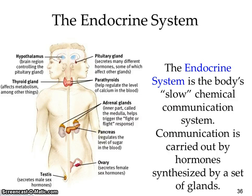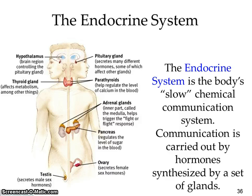The endocrine system is the body's slow chemical communication system, carried out by hormones synthesized by a set of glands. The pituitary gland is known as the master gland — it secretes hormones throughout your body and prepares you for puberty. The thyroid is like your metabolism. The parathyroid regulates calcium in your blood and is part of the thyroid — that's why it's called 'para.'